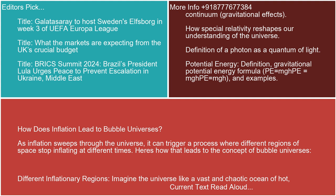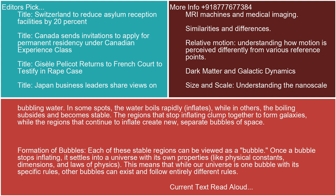Different inflationary regions: Imagine the universe like a vast and chaotic ocean of hot, bubbling water. In some spots, the water boils rapidly — inflates — while in others, the boiling subsides and becomes stable. The regions that stop inflating clump together to form galaxies, while the regions that continue to inflate create new, separate bubbles of space.